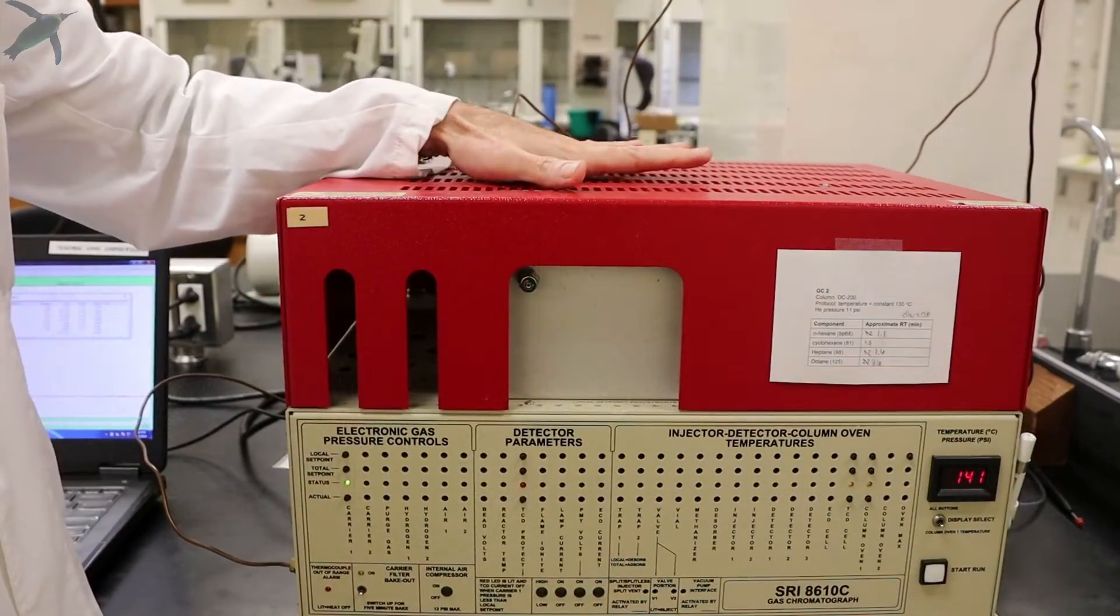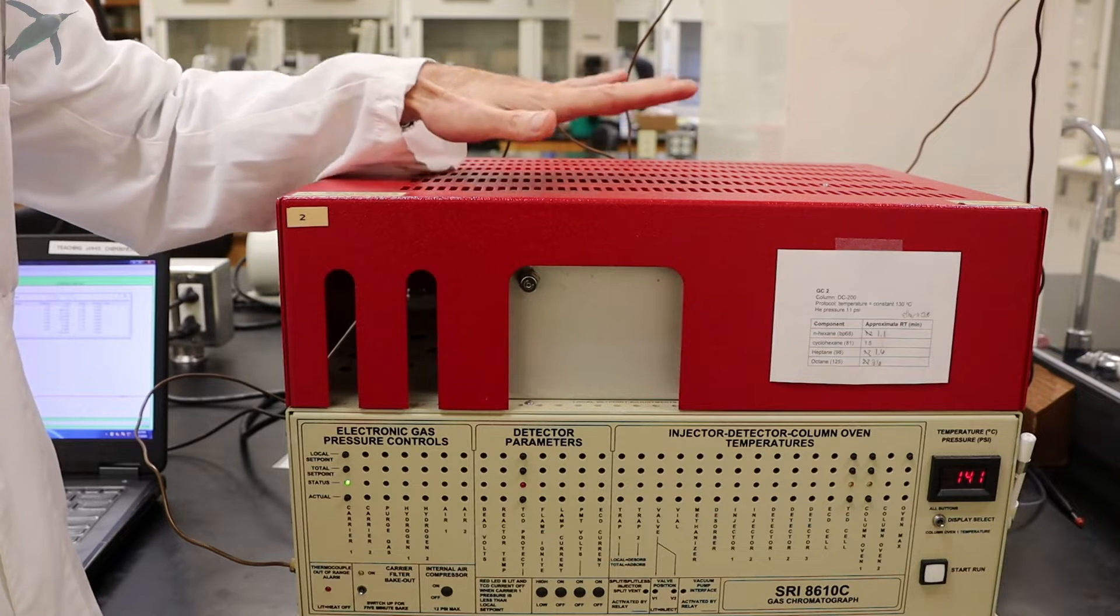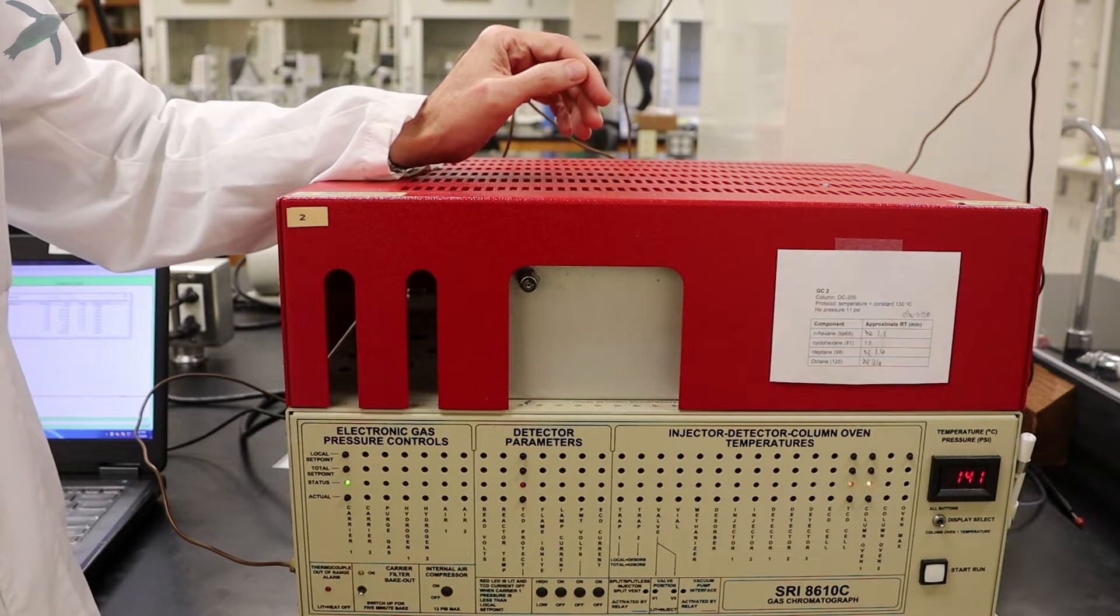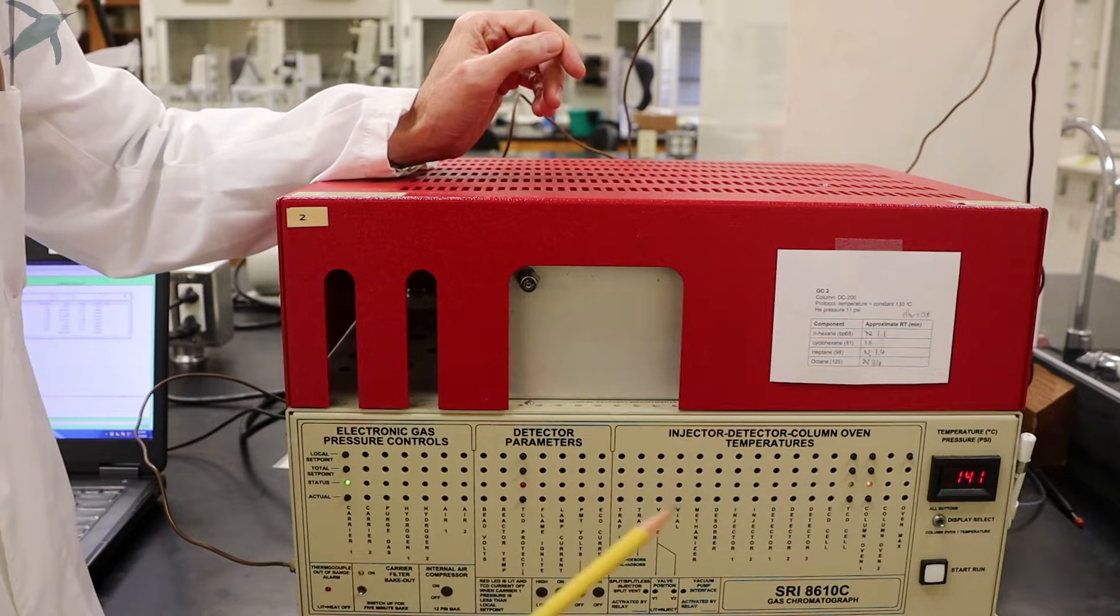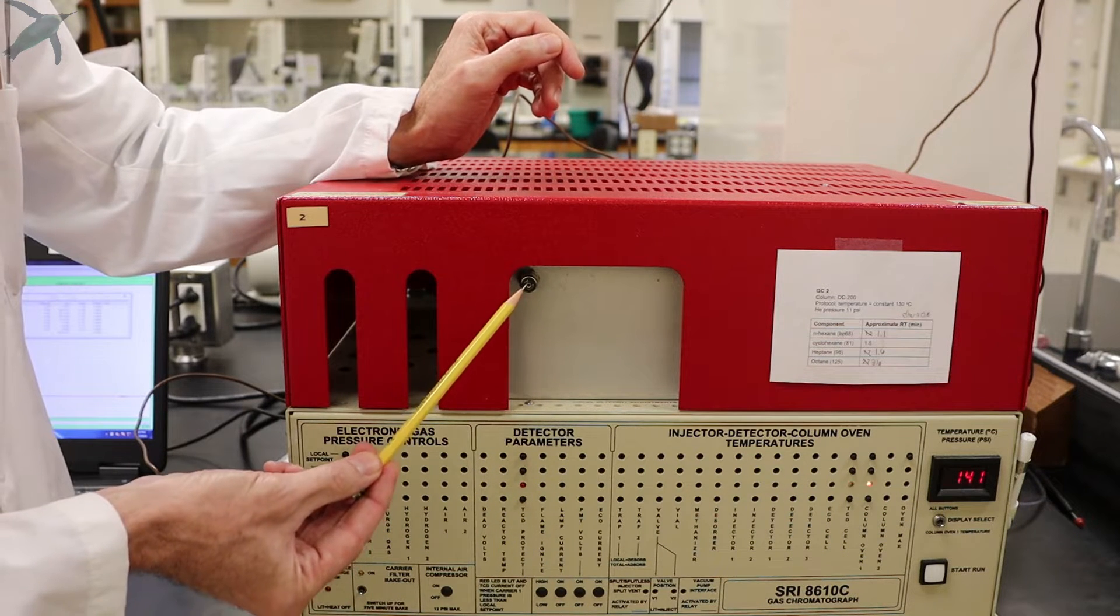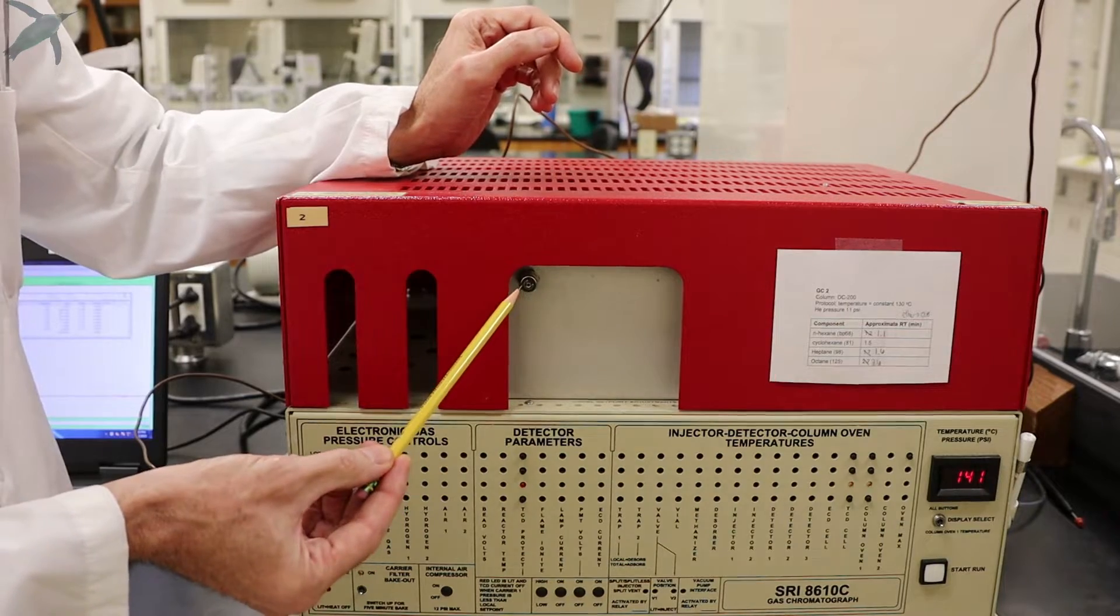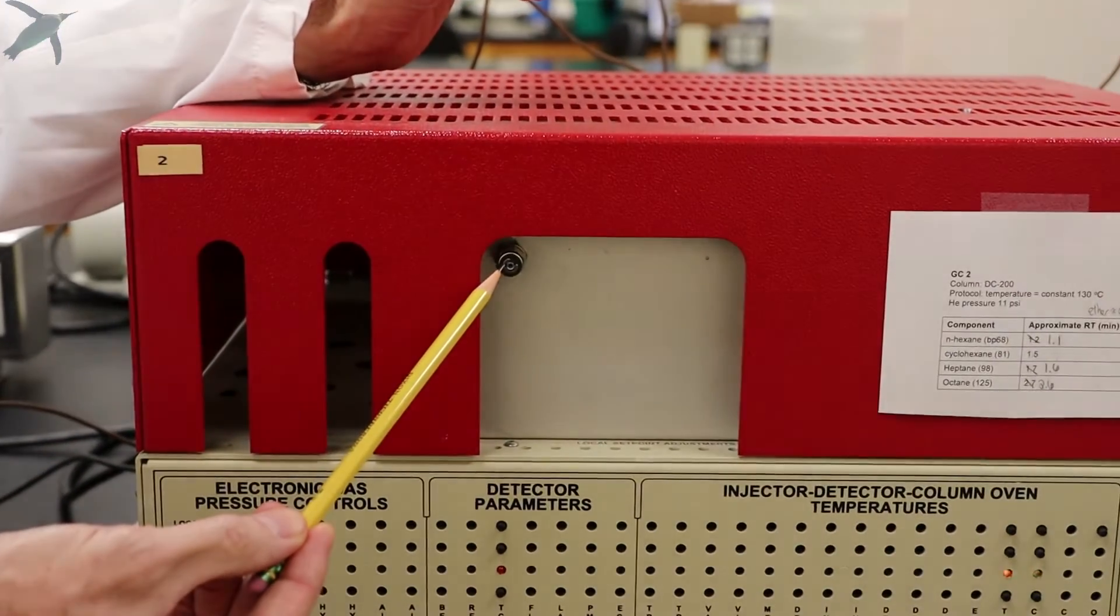This is the gas chromatograph itself. If you look at the front of the instrument, you can see the temperature of the oven displayed here, and you can see the injector port. That's where you will inject your sample through a syringe.